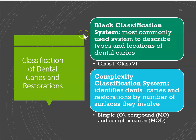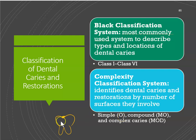There are two ways of classifying caries. The complexity classification system identifies cavities based on how many surfaces are affected. If a cavity is just on the occlusal surface, that is simple. If it's on the mesial and occlusal — two surfaces involved — that is compound, or an MO caries. Complex is when you have three or more surfaces, such as mesial, occlusal, and distal — an MOD caries.